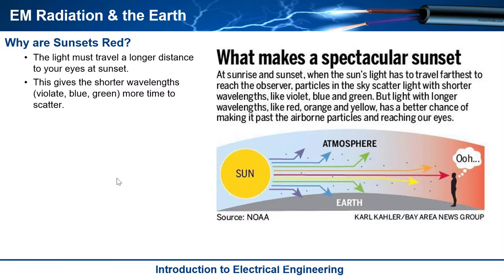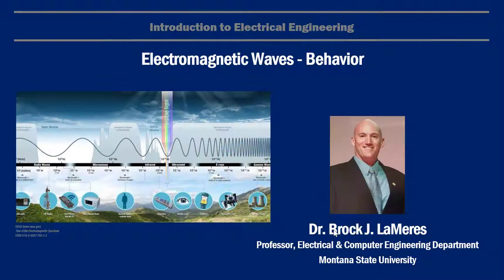But the longer wavelengths don't scatter as much. So that's what we end up seeing at our eyes. So if you look at this image right here, you see all those shorter wavelengths actually scattering and they don't make it to our eyes, but what gets to our eyes are the longer wavelengths. So that is going to be the red, the orange, and the yellow. And that is why sunsets are red.